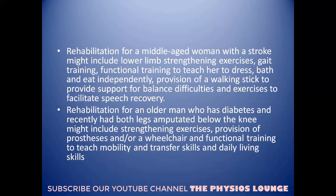A middle-aged woman with a stroke might include lower limb strengthening exercises, gait training, functional training to teach her to dress, bathe and eat independently, provision of a walking stick for balance difficulties, and exercises to facilitate speech recovery. Rehabilitation for an older man who has diabetes and recently had both legs amputated below the knee might include strengthening exercises, provision of prostheses and a wheelchair, and functional training to teach mobility, transfer skills and daily living skills.